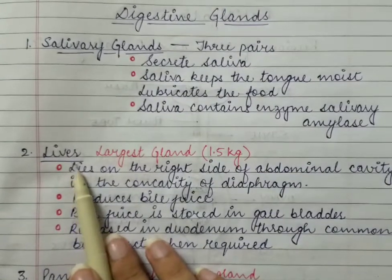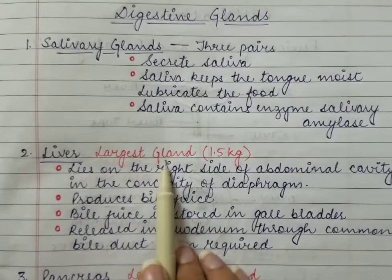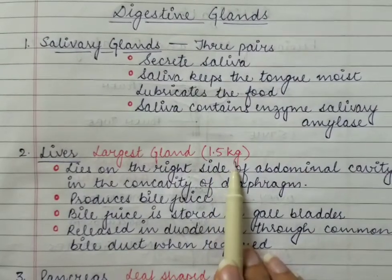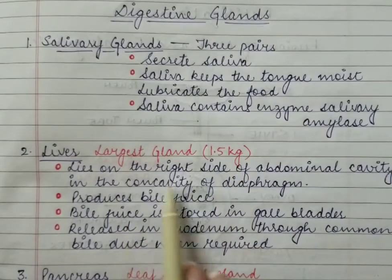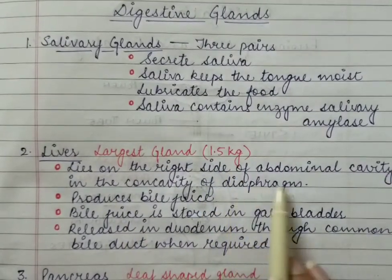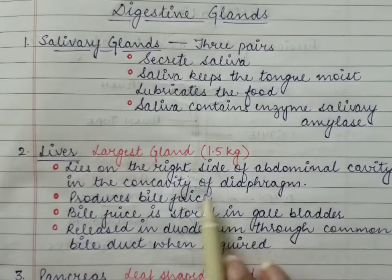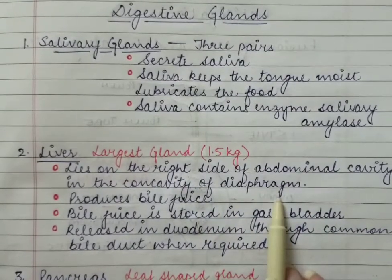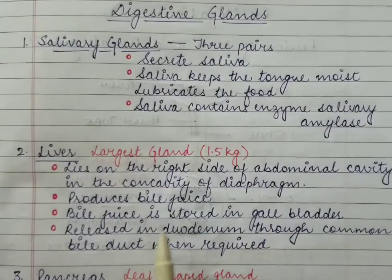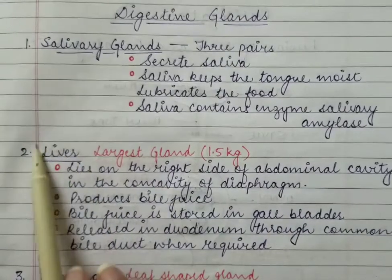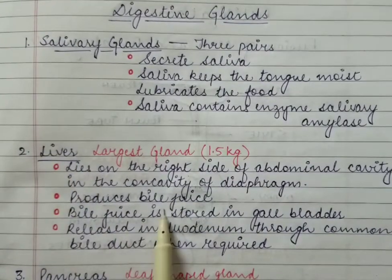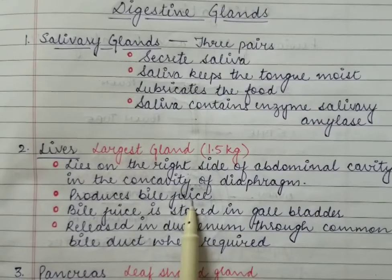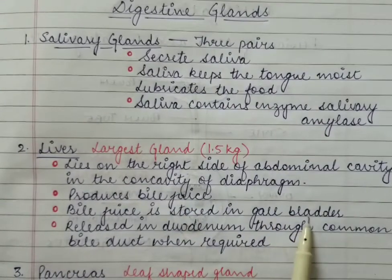Then we have the liver, which is the largest gland and it weighs around 1.5 kg. It lies on the right side of the abdominal cavity in the concavity of the diaphragm. I will show you the diagram. The function of the liver is that it produces bile juice, and this bile juice is stored in the gallbladder.